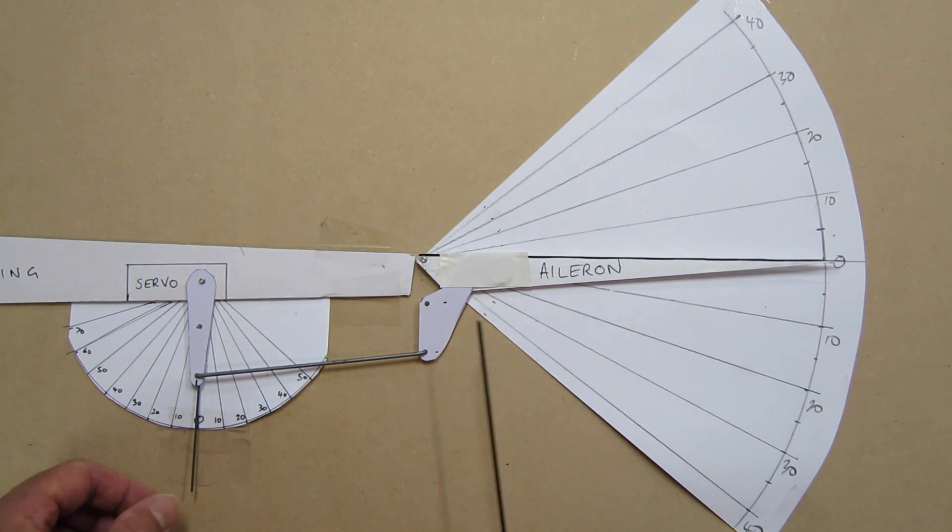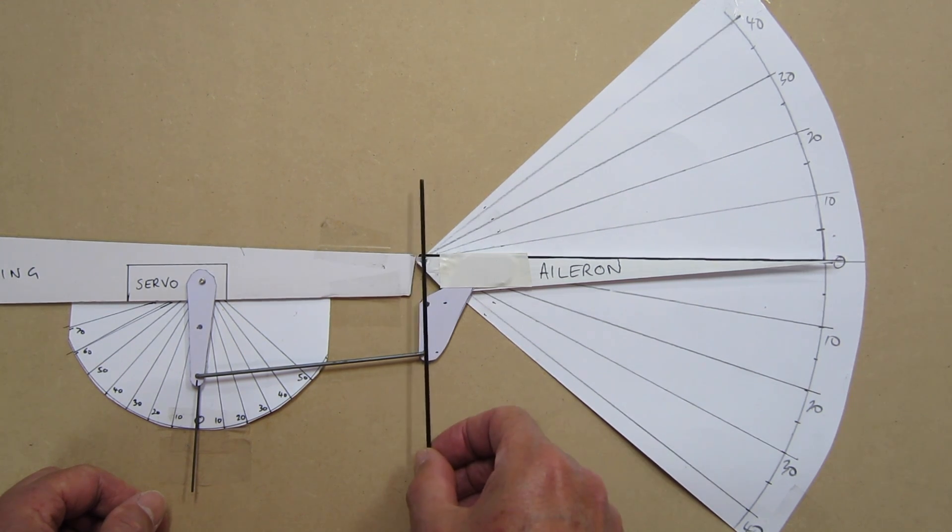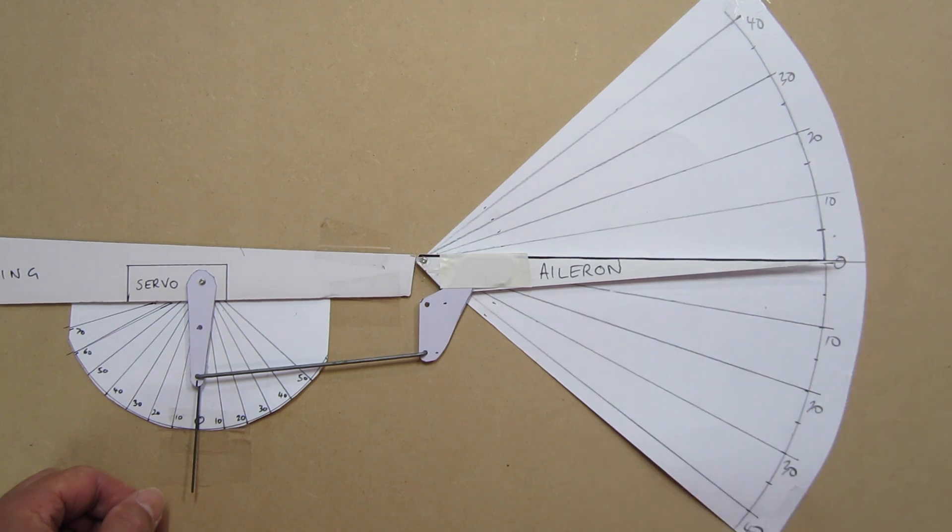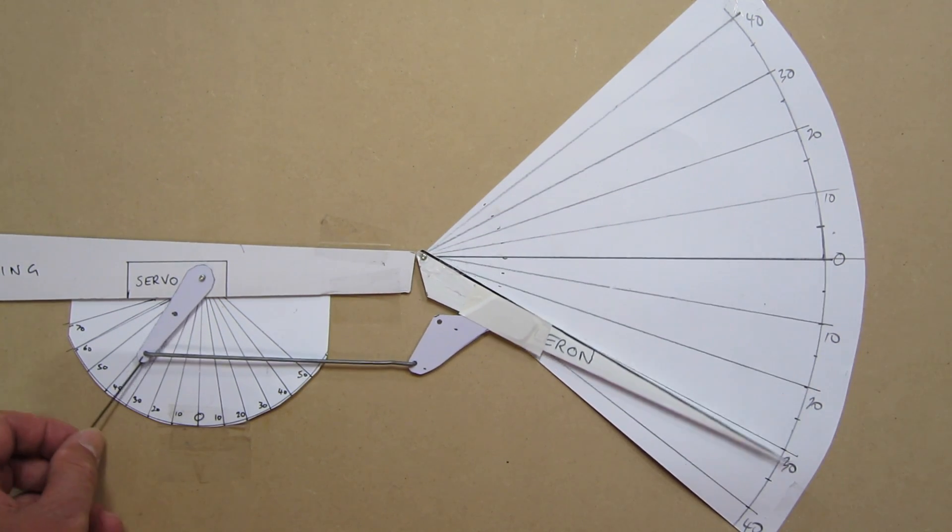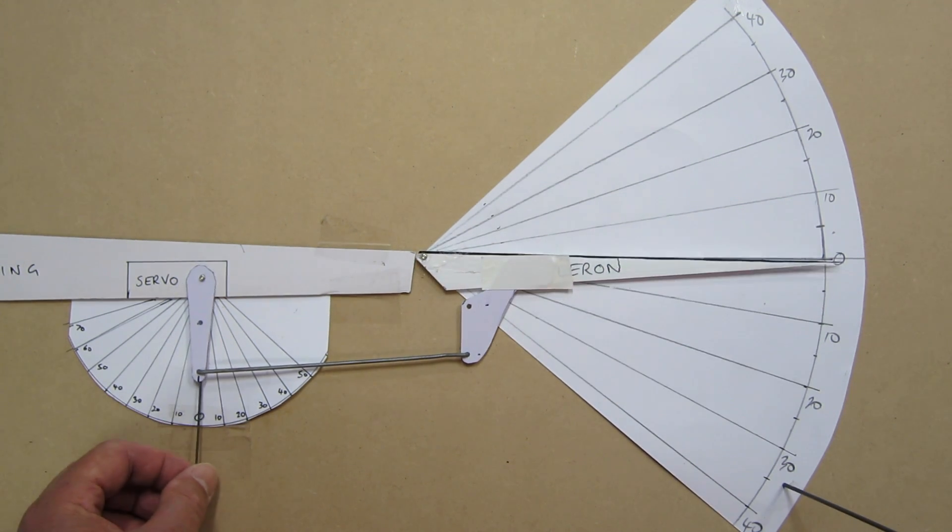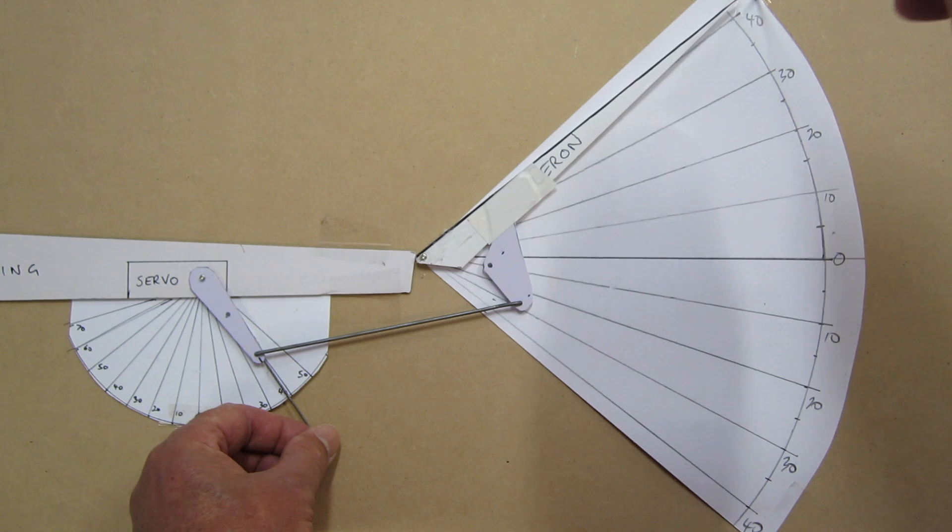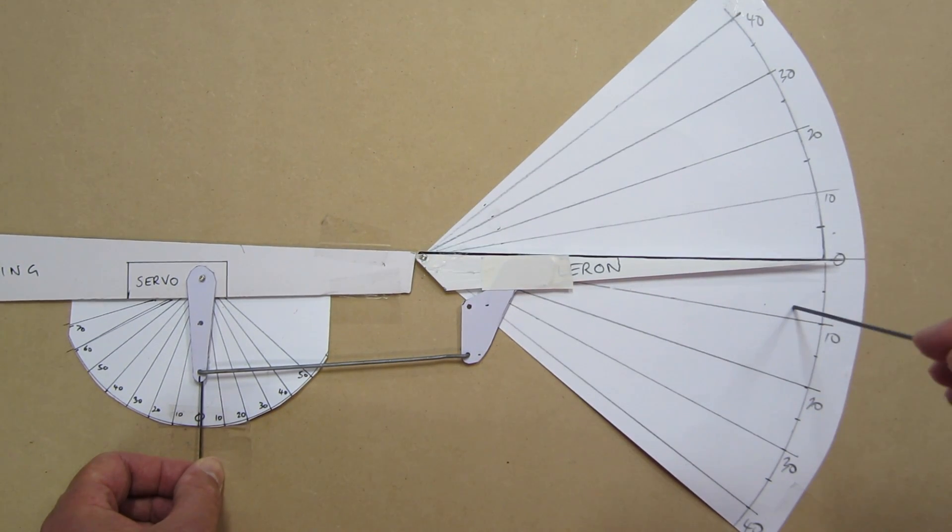So now I'm going to take the control horn and move it back away from the hinge line, so the push rod holes aren't lined up with the hinge line anymore. Let's see what the effect is now. We go forward 40 degrees, and the aileron goes down to about 34. Forward 40 degrees, and the aileron still goes up to 40. So that has introduced some positive differential as well, which means the aileron goes down less than it does go up.